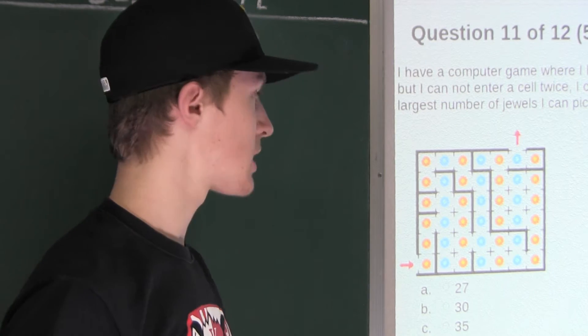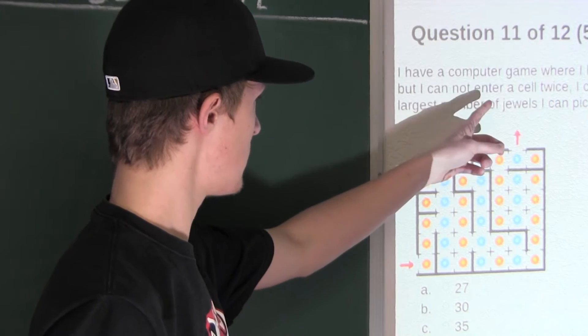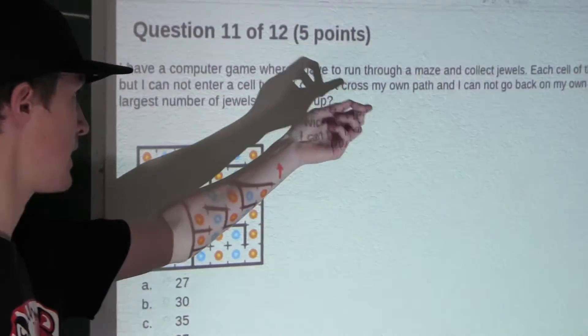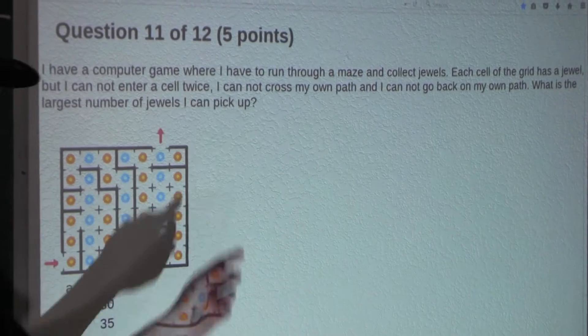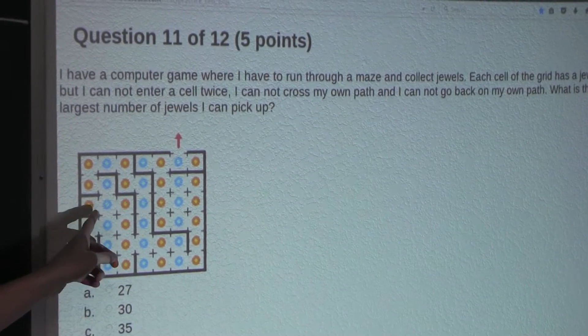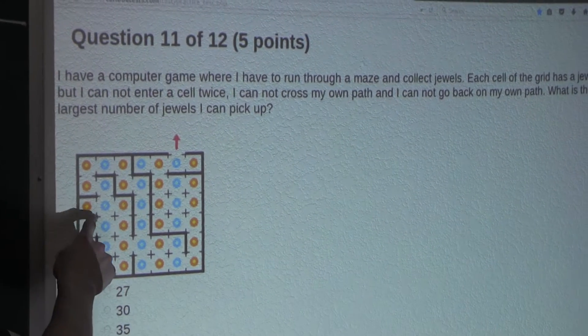And now, from the question, it says I cannot enter a cell twice, I can't cross my own path, and I can't go back on my own path. Now if we look at this cell here, this cell only has 1 entrance.